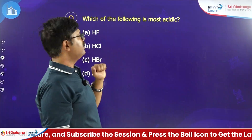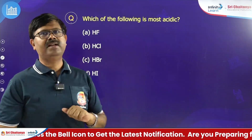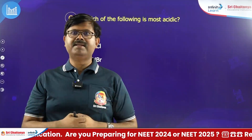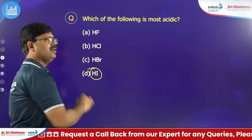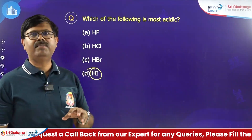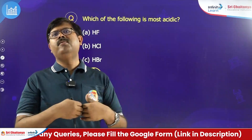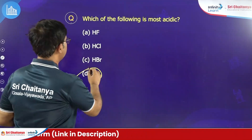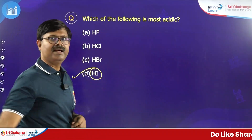Which of the following is most acidic — HF, HCl, HBr, HI? As bond length is increasing down the group, bond strength decreases for hydrogen halides. Therefore HI is easiest to break as H+ and I-, because bond length is greater and bond strength is weak. So HI is the strongest acid, then HBr, then HCl, and least acidic is HF.